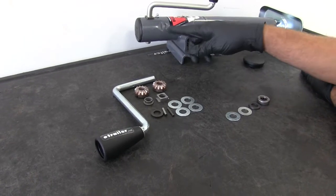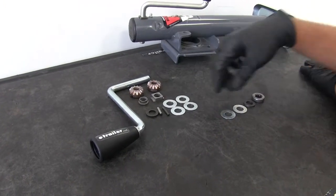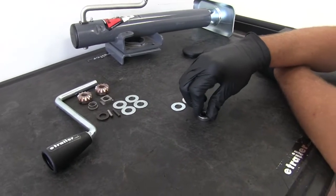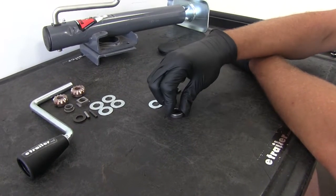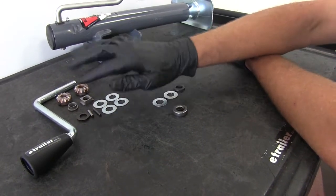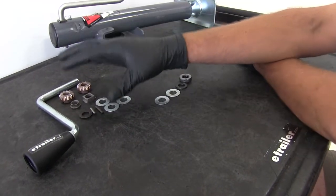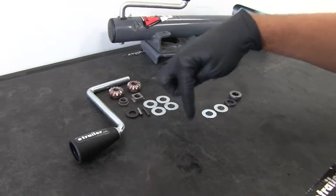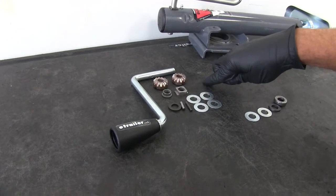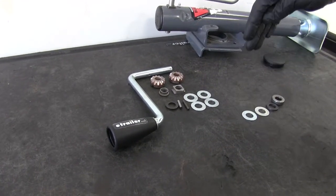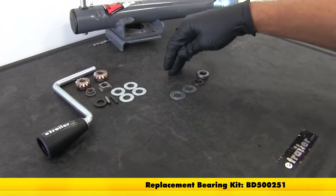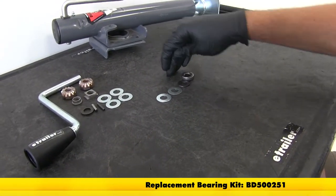Once we get below this bottom gear, there's a bushing inside the jack. That's our friction reducer. So it's a good idea to go ahead and switch out the bearing. The gear kit with the handle is going to be BD500256 and then the bushing in addition BD500251.